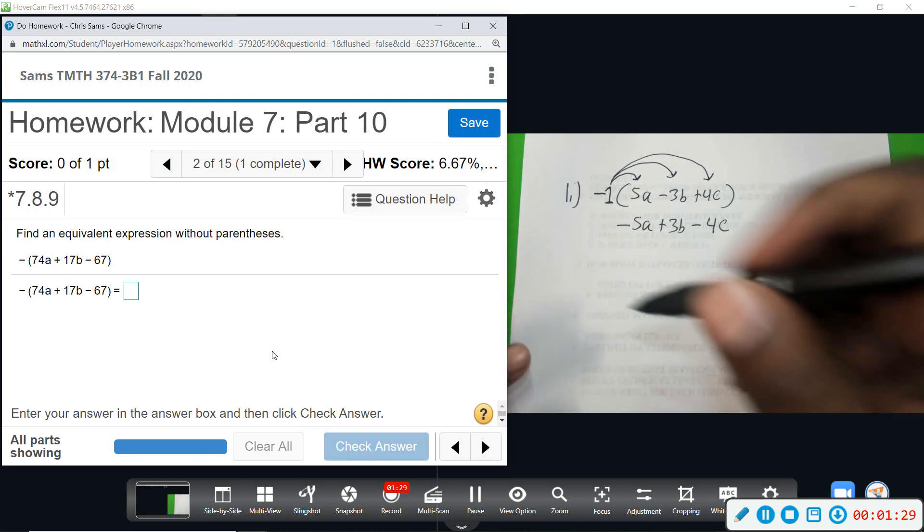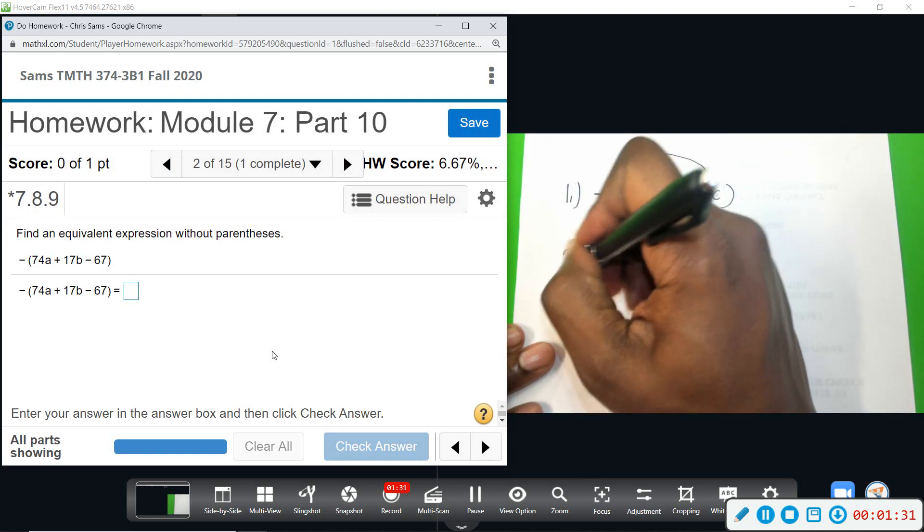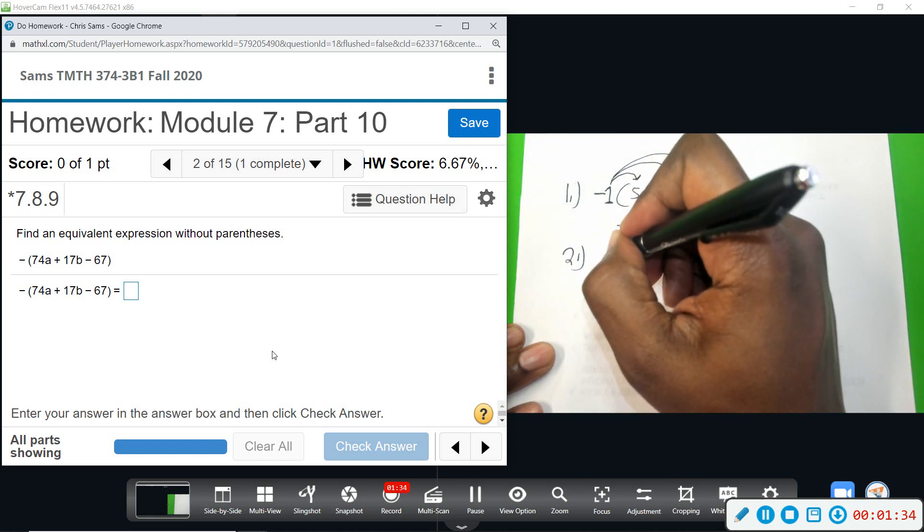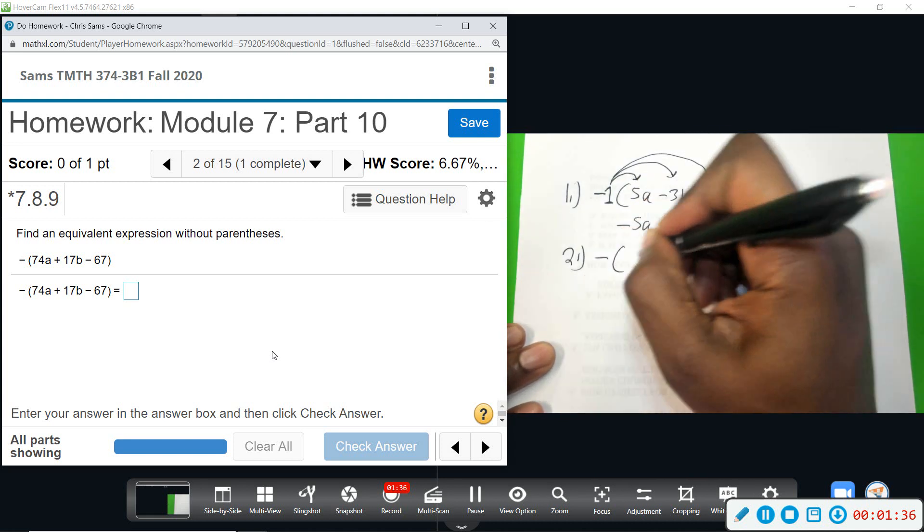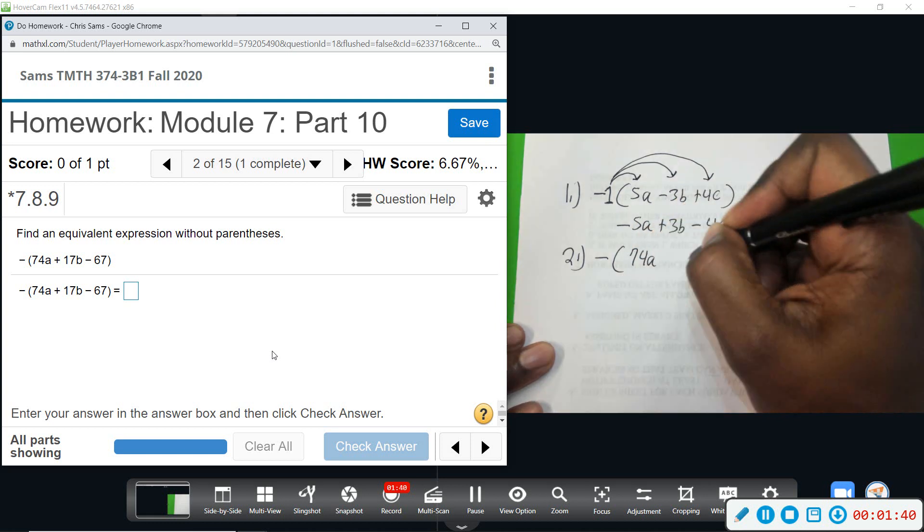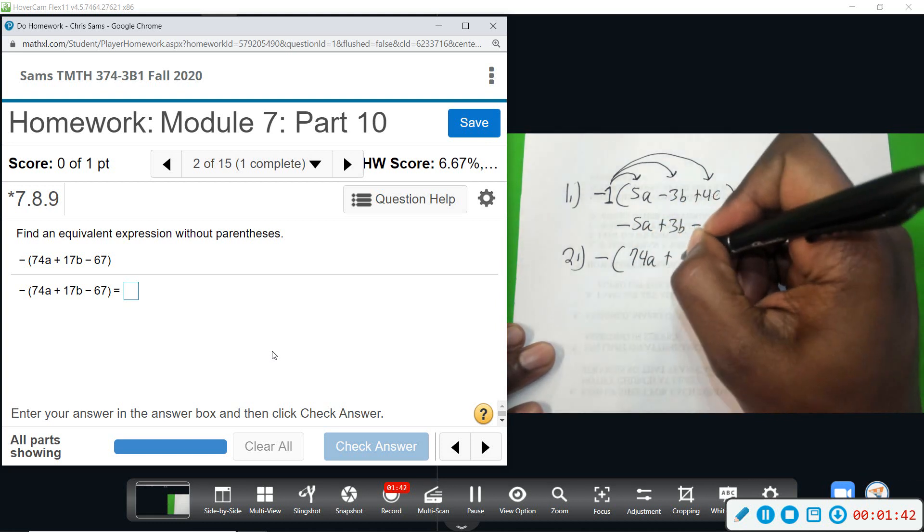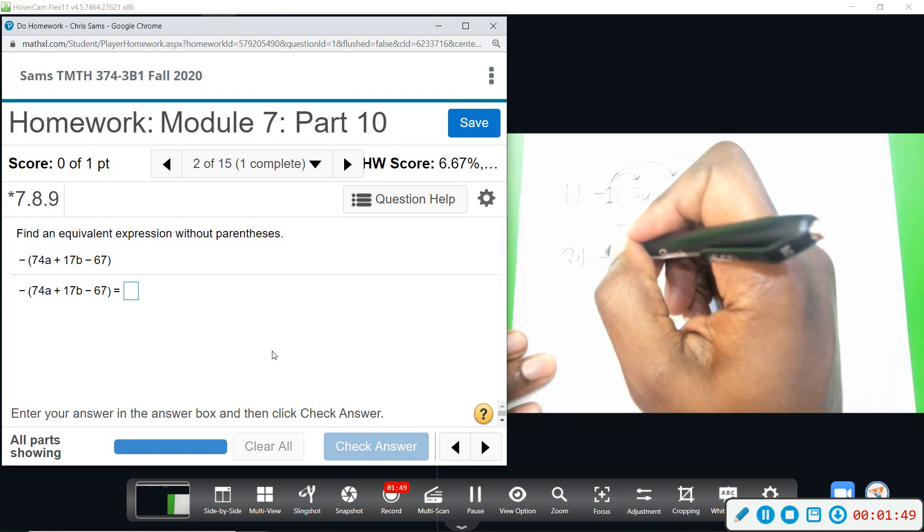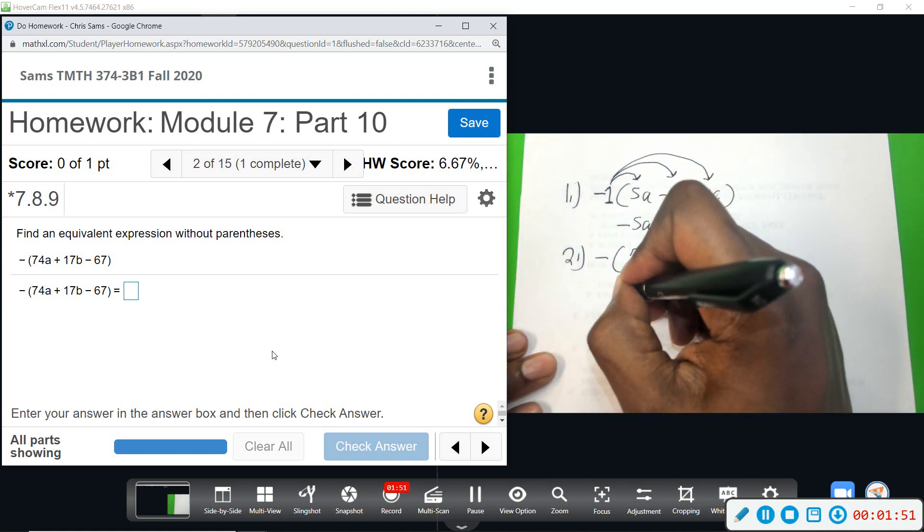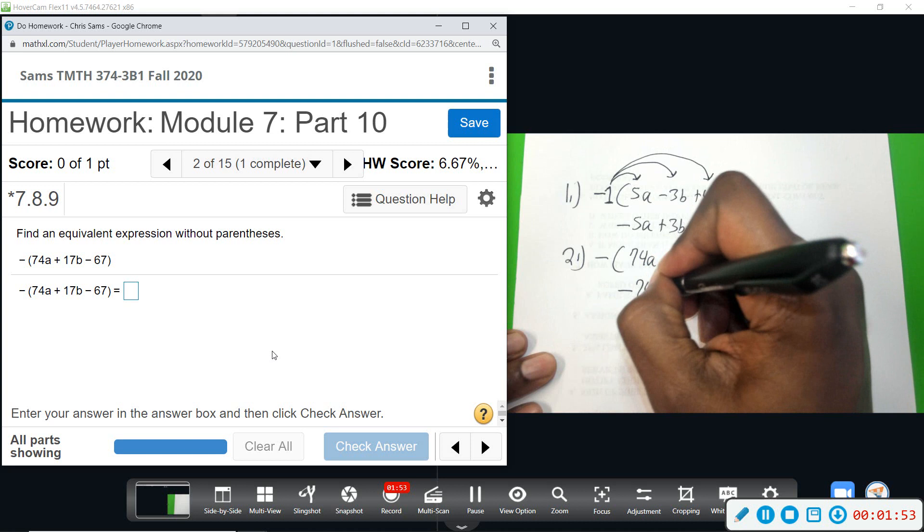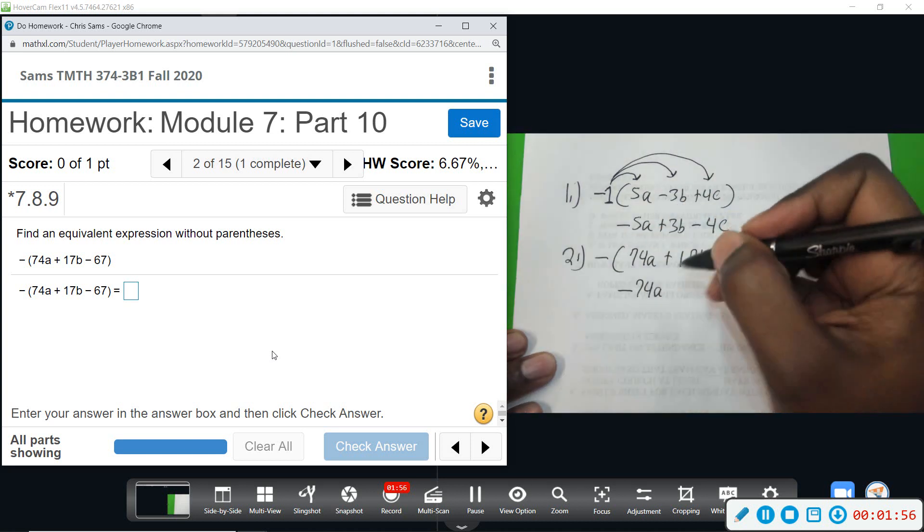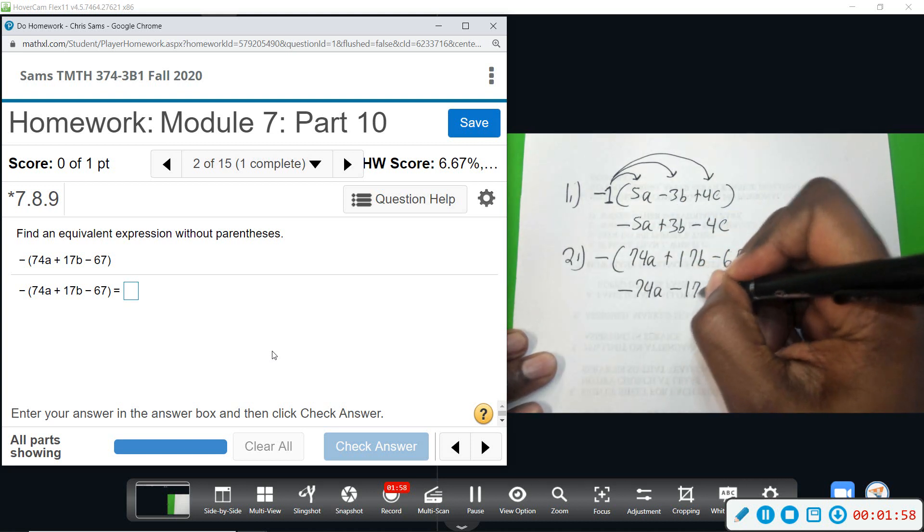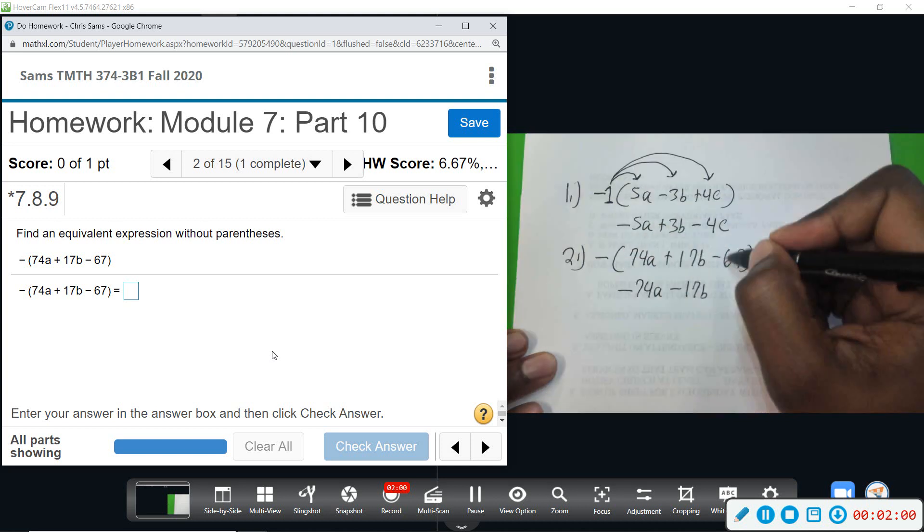I'm going to do the same thing with number 2. Negative times (74a plus 17b minus 67). So distribute: negative 74a, this will be minus 17b, and this negative will become positive, so plus 67.